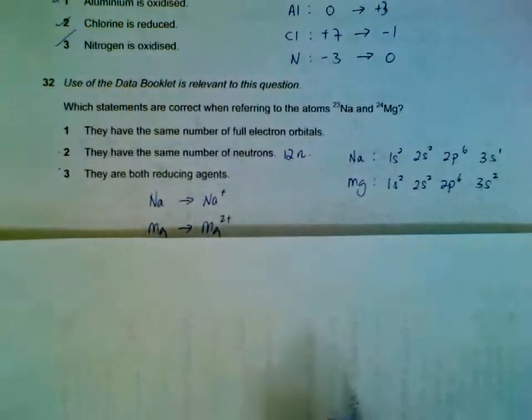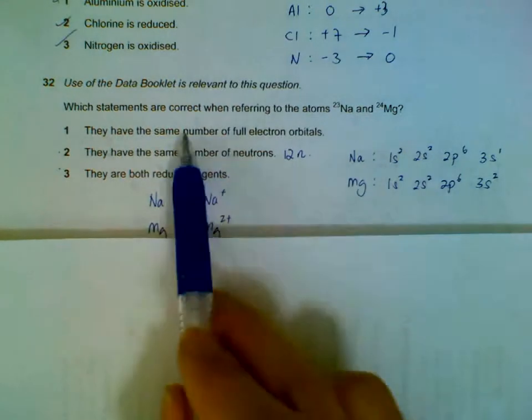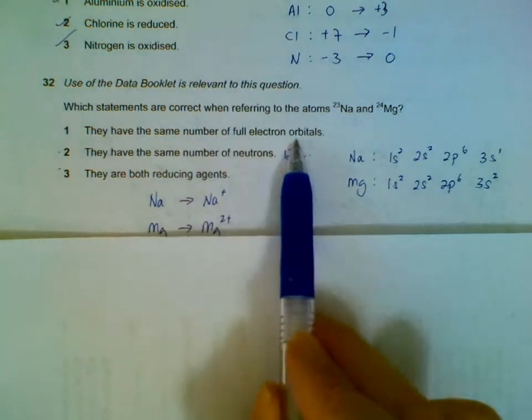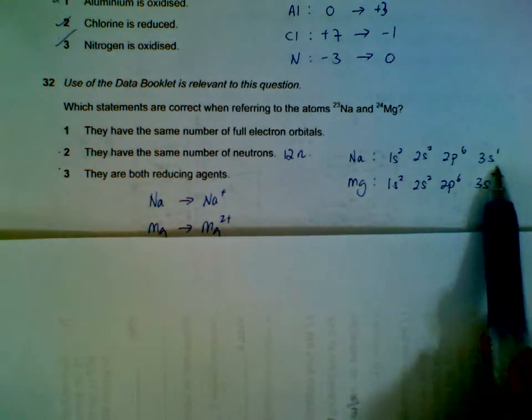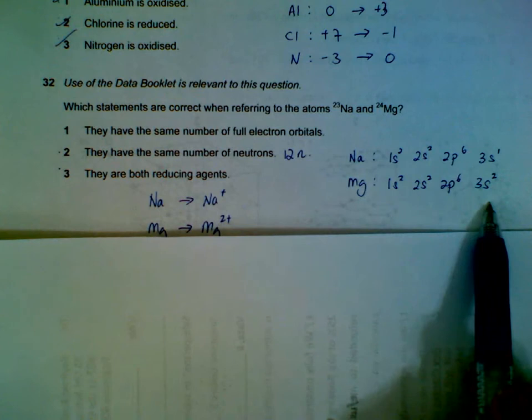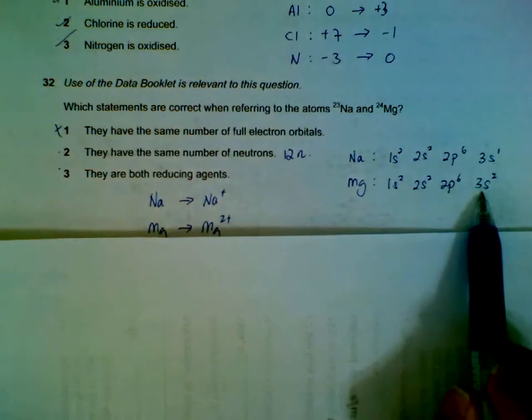Question 32: Comparing sodium and magnesium - they have the same number of full electron orbitals. If you do the spdf, sodium will be 3s1, magnesium has a full s orbital 3s2. So they do not have the same number of electron orbitals that are full. It is full for magnesium.